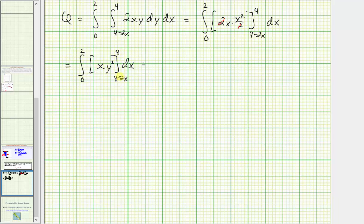And now these are limits of integration for y, so we'll substitute these values for y and then find the difference. So when y is equal to four, we would have x times four squared. And then when y is equal to four minus two x, we'll have x times the quantity four minus two x squared.